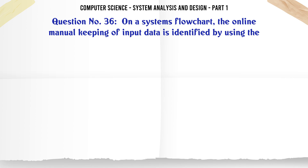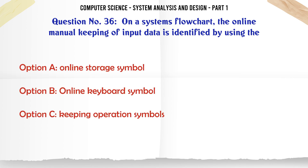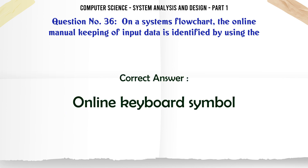On a systems flowchart, the online manual keying of input data is identified by using the: A. Online storage symbol. B. Online keyboard symbol. C. Keying operation symbols. D. Manual operation symbols. The correct answer is: Online keyboard symbol.